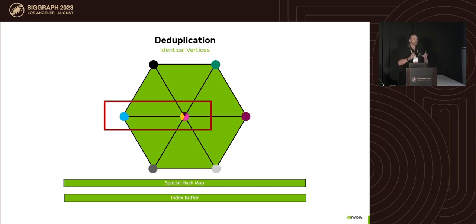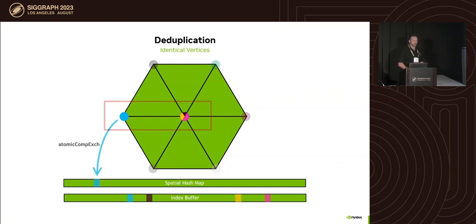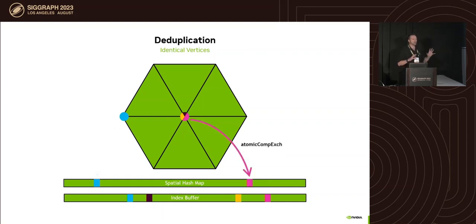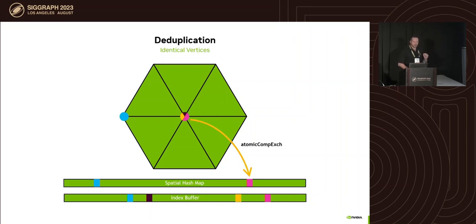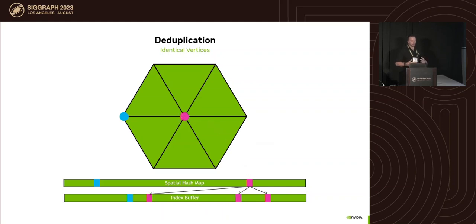To handle duplicates we use what we call a spatial hash map. We walk through the vertices massively on the GPU and analyze them. The first vertex finds a location in the spatial hash map — nothing was there before — so we store its descriptor. Then we do the same with another vertex: the purple one finds a place, the yellow one finds the exact same place so we don't change anything, and so on.